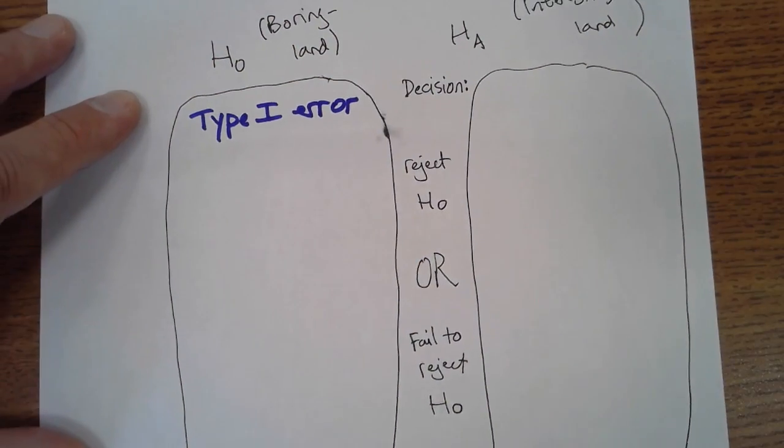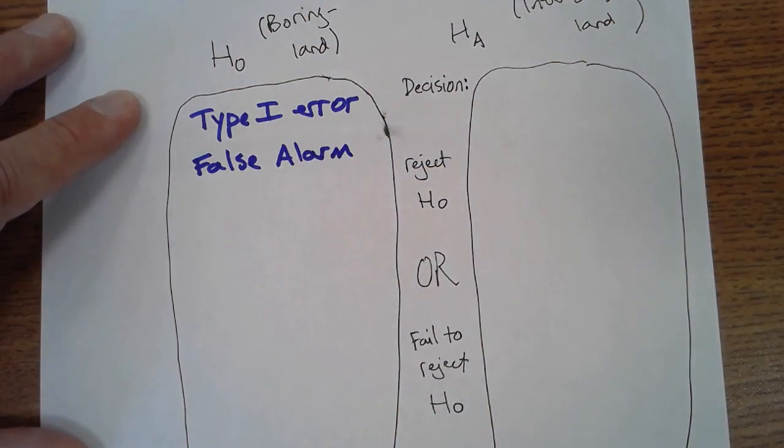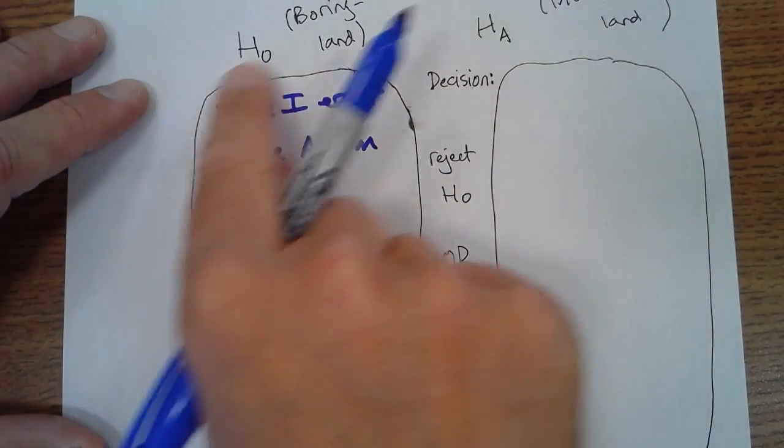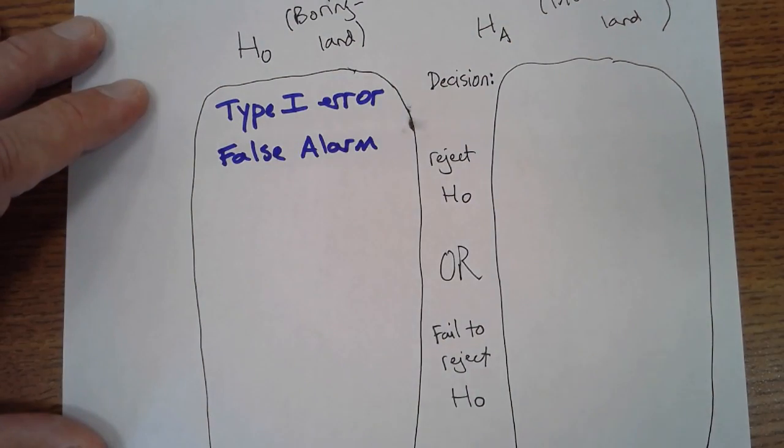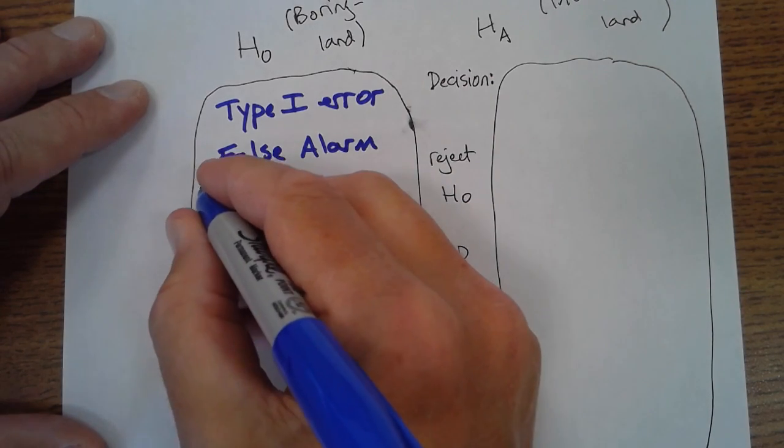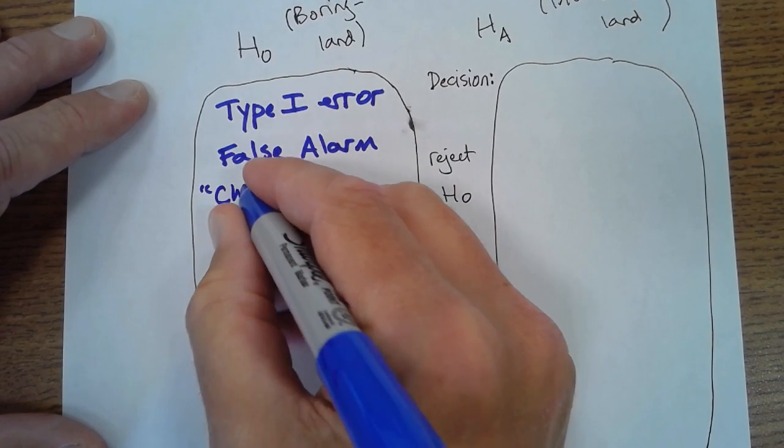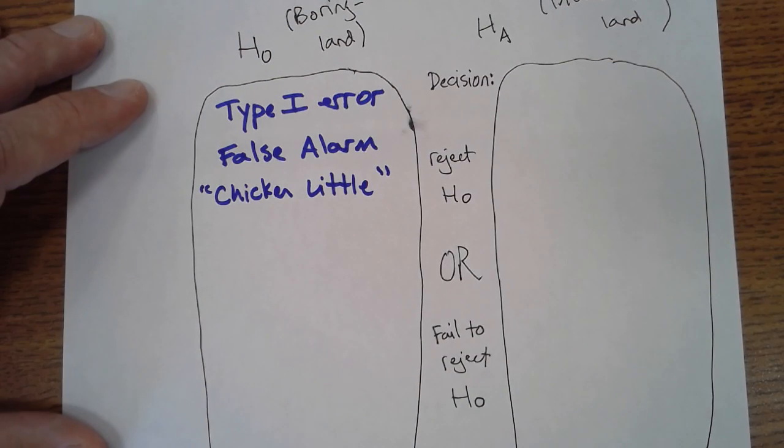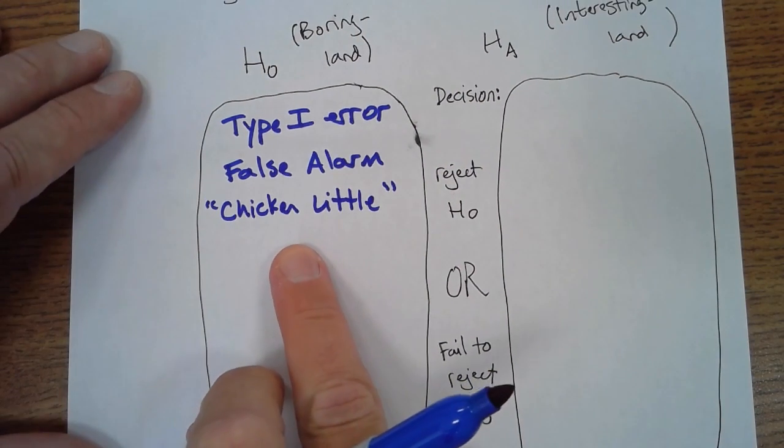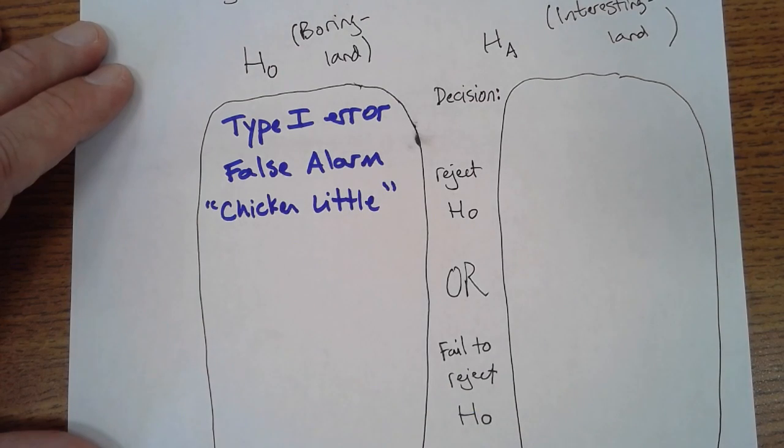That's called a type 1 error. It is sometimes called a false alarm, and in the video called SadSack, this outcome is represented by a character. The character in this video, which represents the false alarm, is Chicken Little. Chicken Little represents this outcome because in the children's story with Chicken Little, she's the one who screamed, the sky is falling, the sky is falling, when really it wasn't. It was a false alarm.